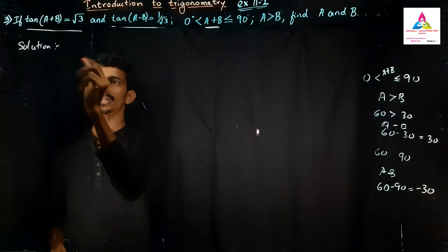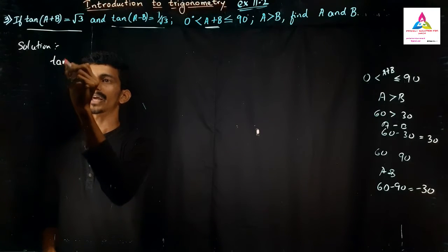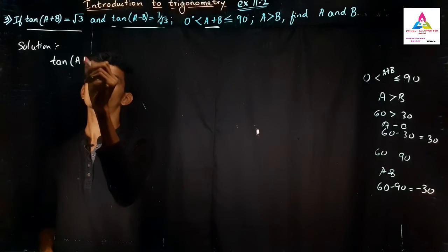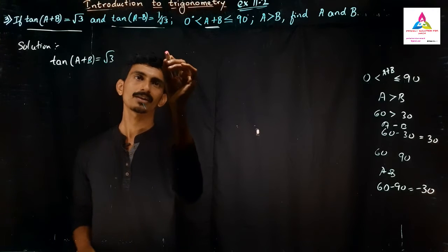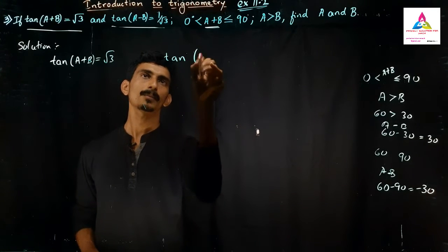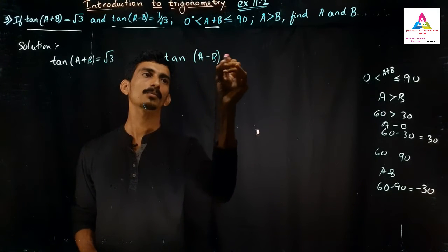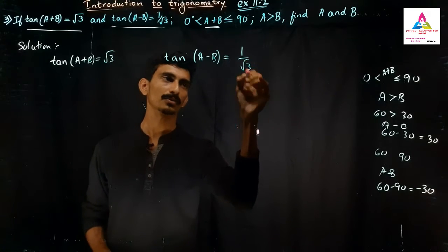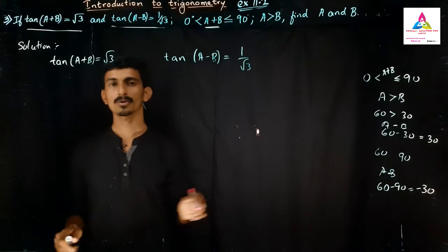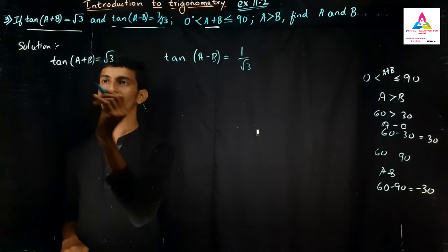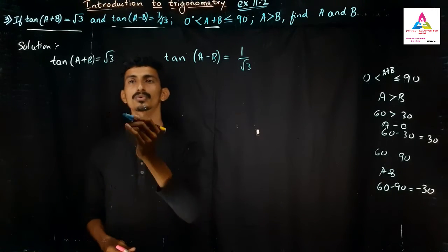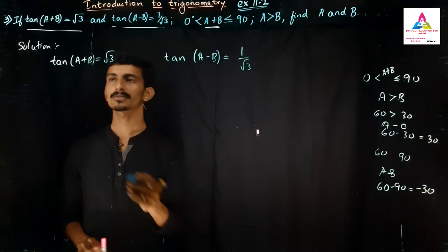So let us write it. tan(A+B) value will become root 3 it seems, and tan(A-B) value will become 1 by root 3 it seems. So it is not a big problem. So you know that tan value is root 3. Tan which angle value is root 3? If you know that you can solve this problem very easily.